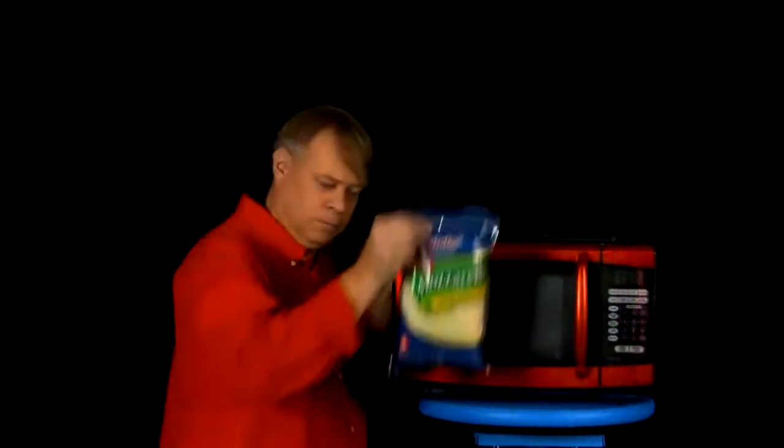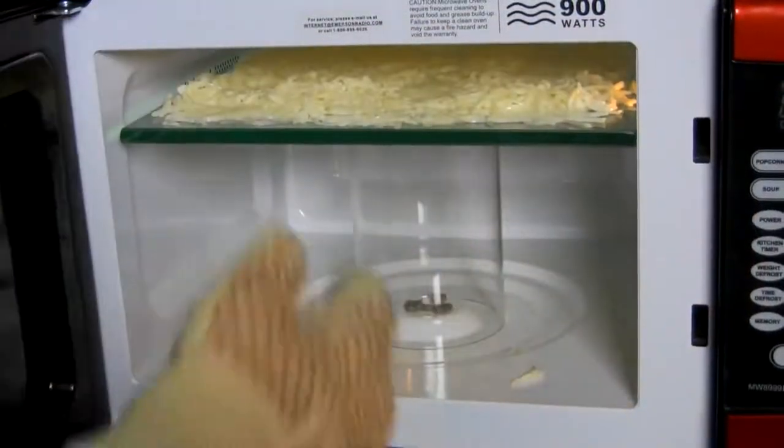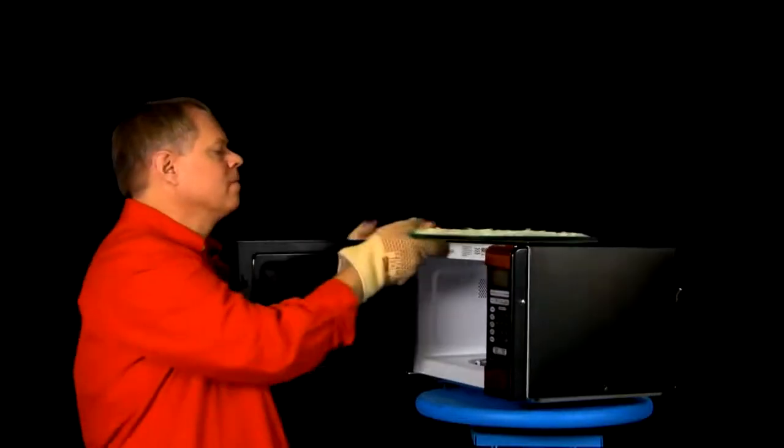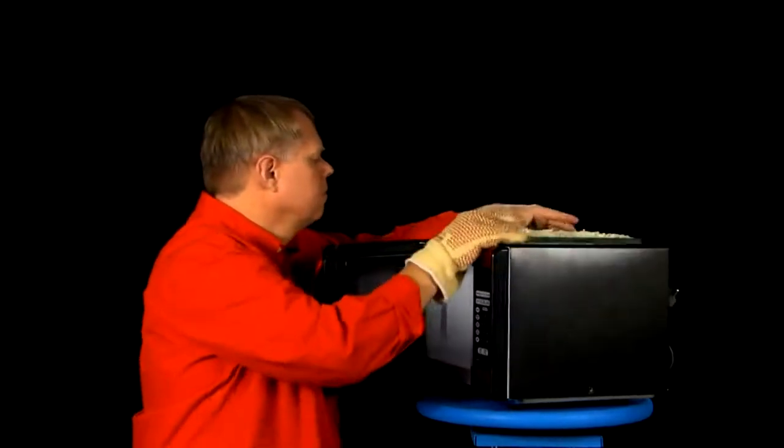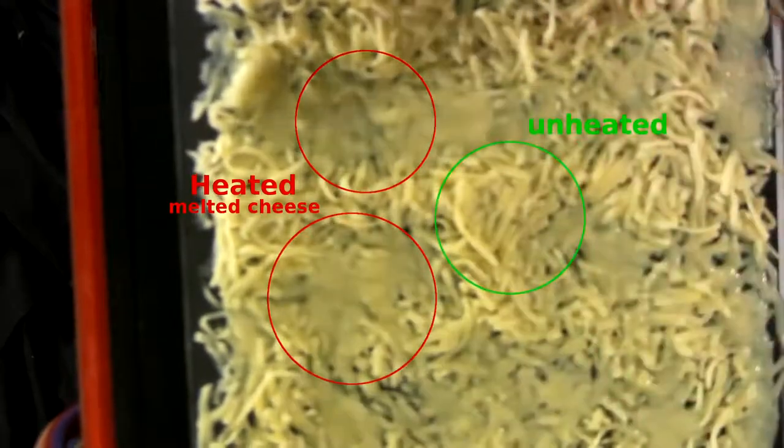Now, you can get an idea of the wavelength of the energy emitted by the magnetron using cheese. You can see sections where the cheese is completely melted and other sections where it's completely unheated.